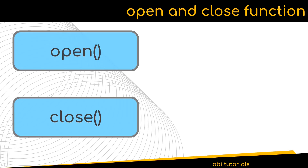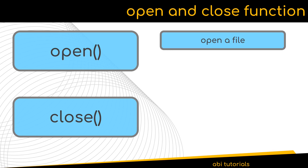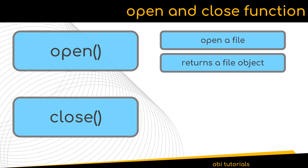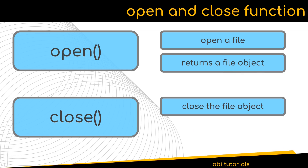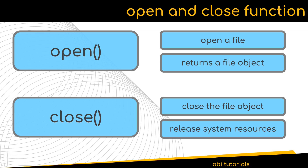Before proceeding with the read, write, and append functions, we should be aware of two important functions: the open and the close functions. The open function is used to open a file and returns a file object that can be stored in a variable. Further operations on the file such as read, write, append, or close can be done using that file object. The close function is used to close the file, which helps in releasing any system resources back to the system.